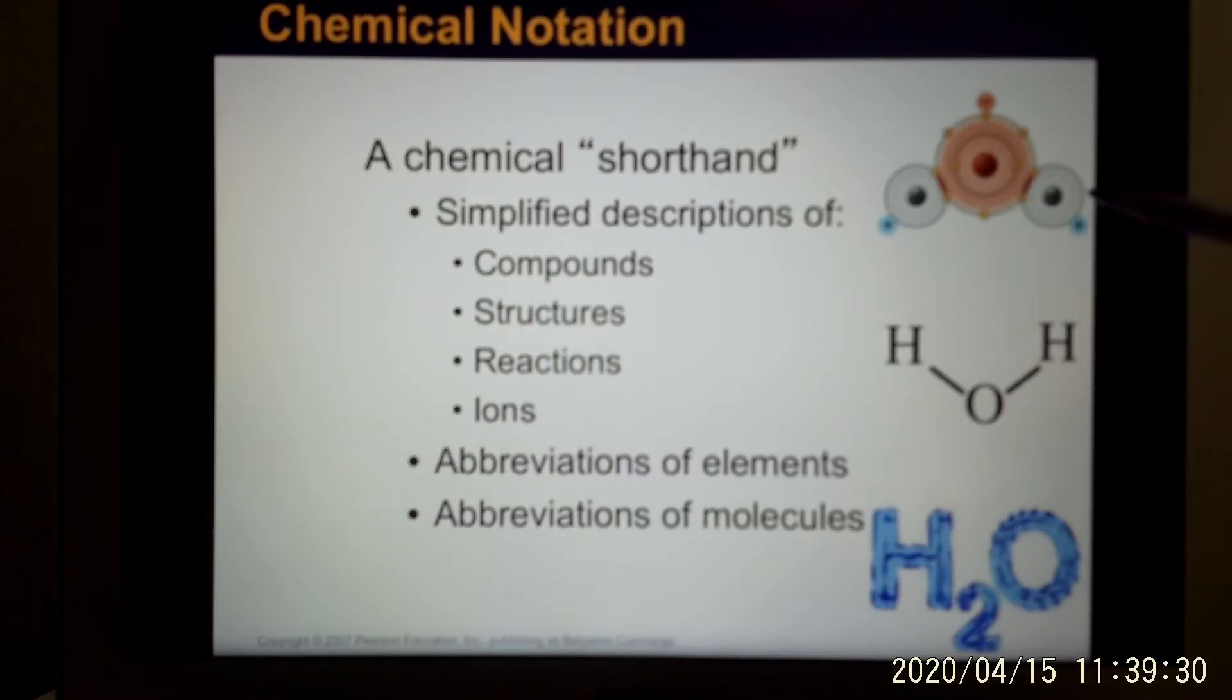So chemical notation, when we write a chemical molecule, we can put them in this way, that's the structure, or we can write each atom O, H, H, so that's H2O, that's water. The dashed line represents the covalent bond, or we can write an abbreviation like H2O, that's water.